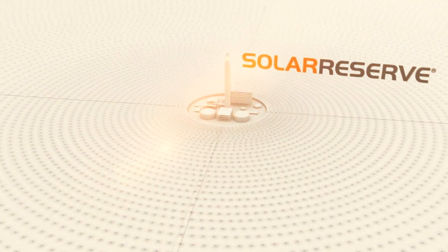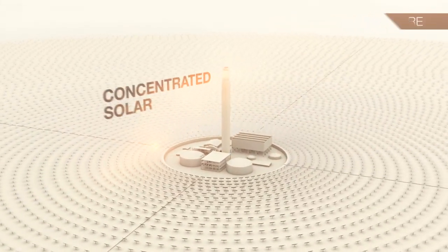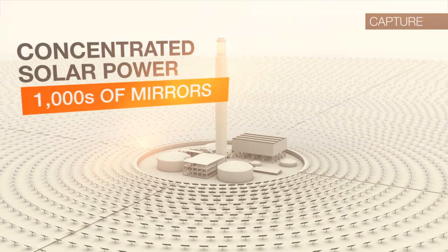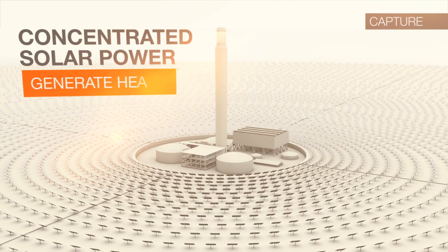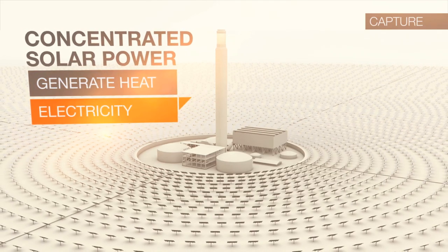Solar Reserve's technology, typically referred to as concentrated solar power, uses thousands of mirrors to reflect and concentrate sunlight onto a central point to generate heat, which in turn is used to generate electricity.